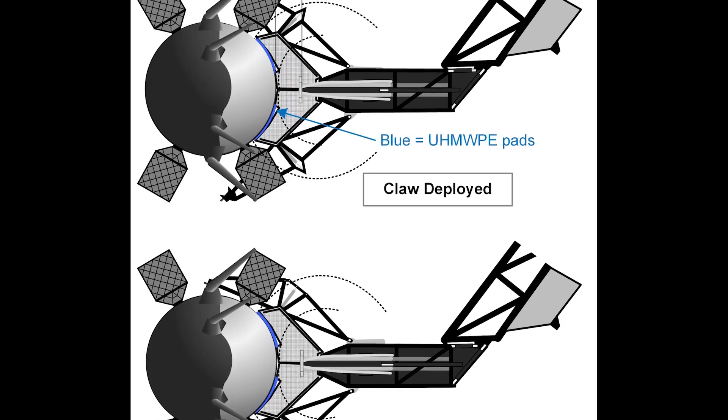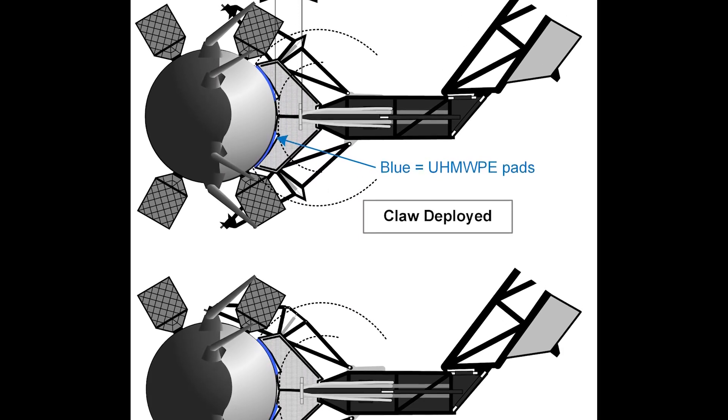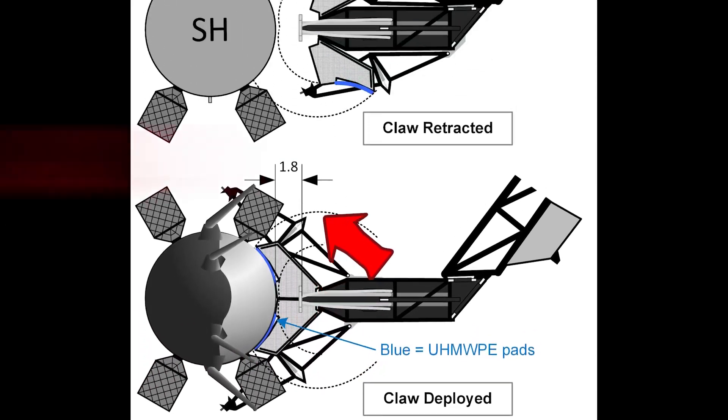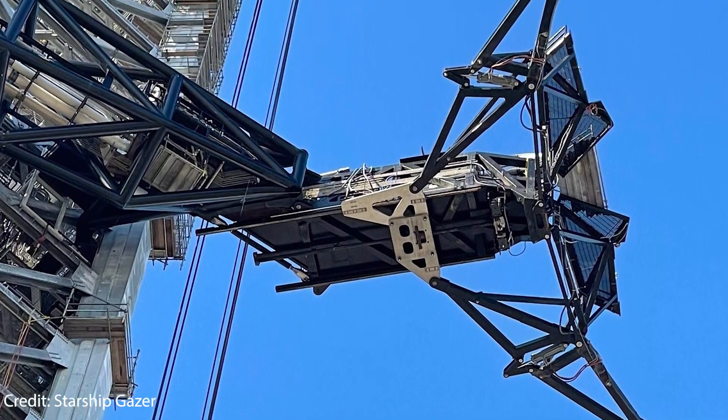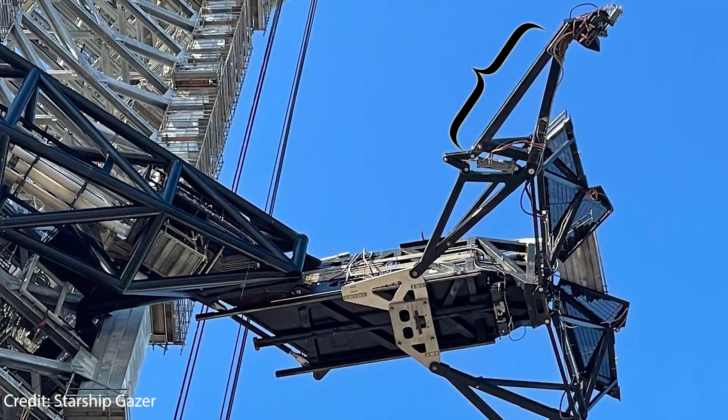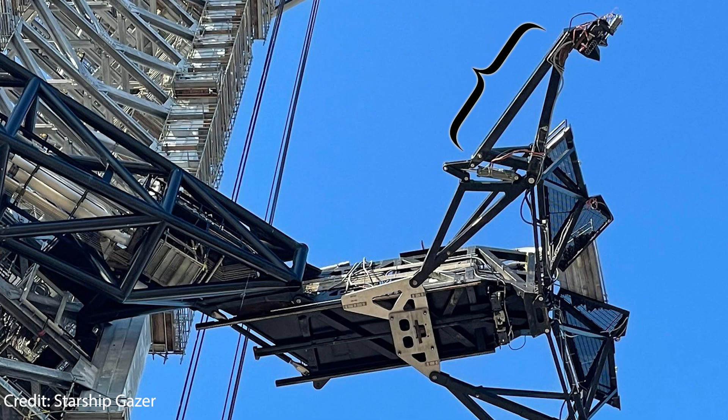In itself the claw is made of several parts. On its upper side we find the QD arm platform, which is split into two parts whenever the claw is retracted, but unifies into one single platform when deployed. On the bottom side we find the actual claws, including the grippers, which could also be described as the front half of the claw.